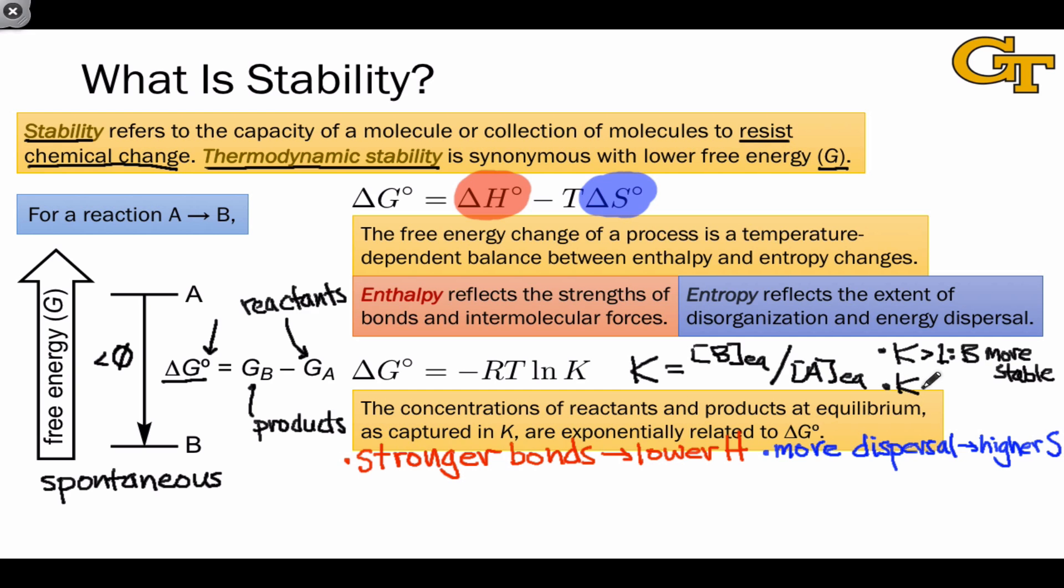On the other hand, in cases where delta G is positive, K must be less than 1 based on this equation, and we can infer from that that A, the reactant, is more stable than B.